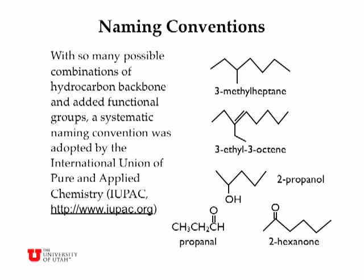There are lots and lots of possible combinations of hydrocarbon backbones and functional groups, so a systematic naming convention was adopted by the International Union of Pure and Applied Chemistry, or IUPAC. The first compound here has a base chain — the longest chain in the molecule — that is seven carbons long. That gives a base name of heptane. To carbon number three, numbering from the left-hand side, we have a methyl group appended. So this is 3-methylheptane.